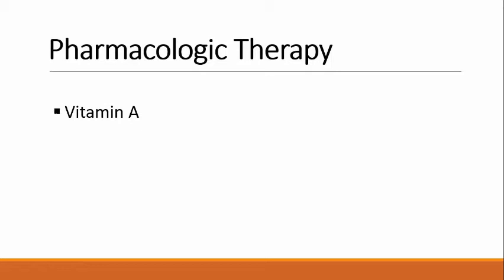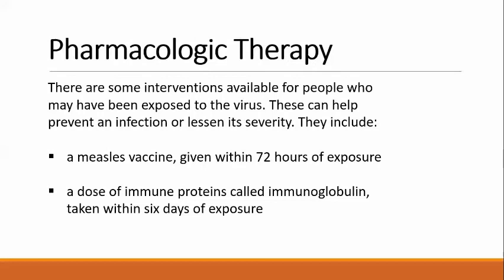Vaccines: The live MMR vaccine is used to induce active immunity against viruses that cause measles, mumps, and rubella. Human immunoglobulins prevent or modify measles in susceptible individuals if administered within six days of exposure. Vaccination not only protects you and your family but also prevents the measles virus from circulating in your community and affecting those who cannot be vaccinated.